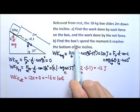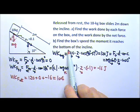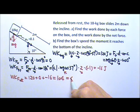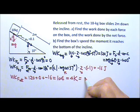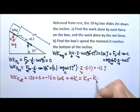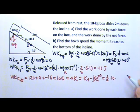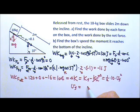In part b, we want to find the speed of the box when it reaches the bottom of the incline. Using the work-energy theorem, the work done by the net force equals the change in kinetic energy: final minus initial. The box starts from rest, so initial KE is zero. Therefore, final KE = 104 J, and since KE = ½mv², we have 104 = ½ × 10 × v², giving a final speed of 4.56 meters per second.